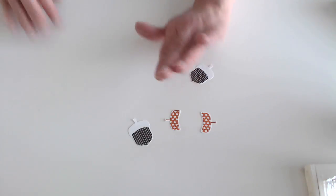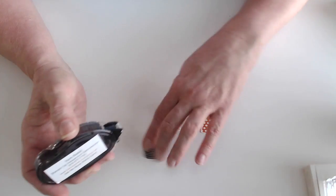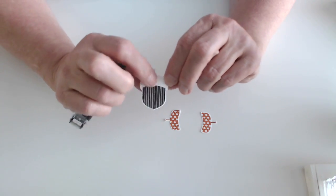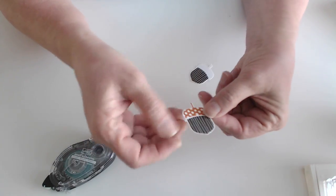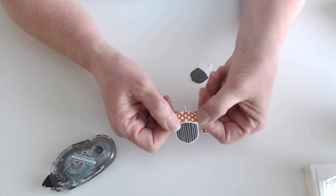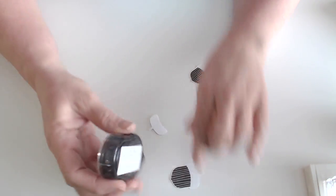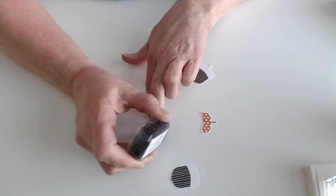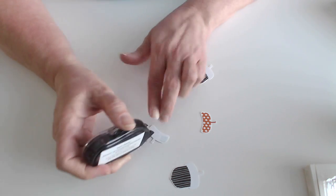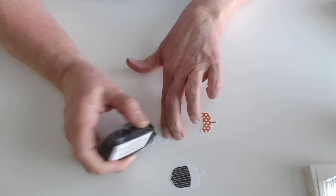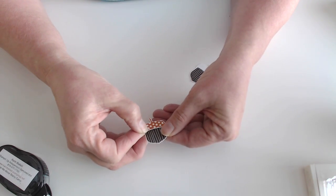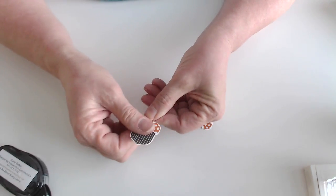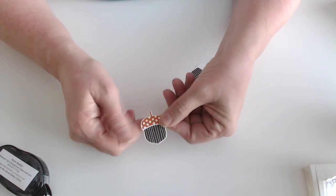And I am going to go ahead and put those together just to show you how they look put together. And again, the reason I did cut the whole thing is because when you put the top on, that gives a base for you to attach it to. So I'm just going to take my snail adhesive and I'm just going to cut the stem. And I have an acorn. Isn't he cute?